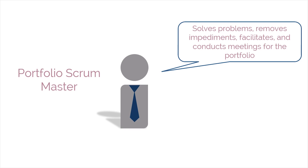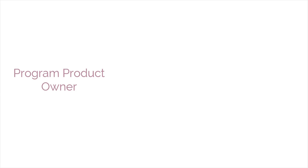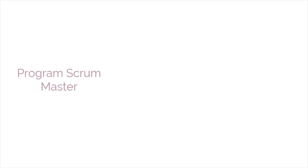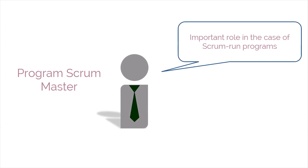Furthermore, in programs, to manage this, Scrum has an important role called program product owner. He or she defines the strategic objectives and priorities for programs. Program Scrum Master is the next important role in the case of Scrum-run programs.